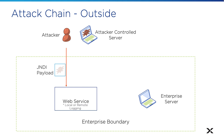they're going to embed some string that has a JNDI payload that gets logged. That payload causes the vulnerable logging service to make a request out to an attacker-controlled server on one or more different types of protocols such as LDAP or RMI and others. Then that download downloads and runs an exploit running with the permissions of the Java process.